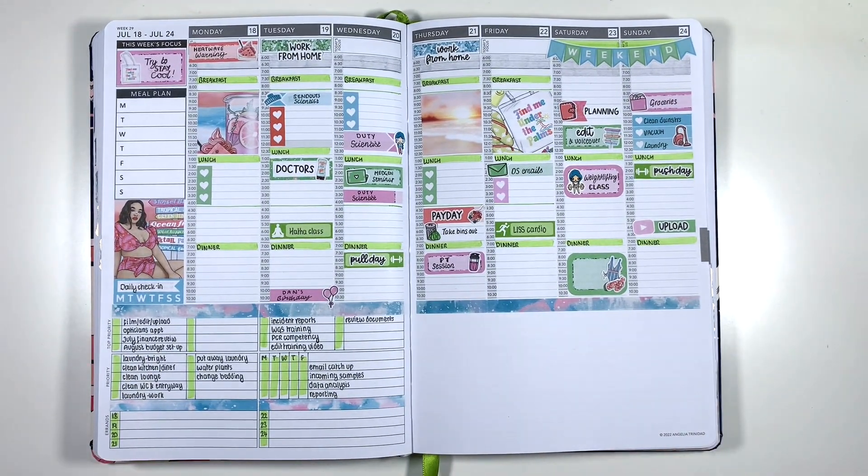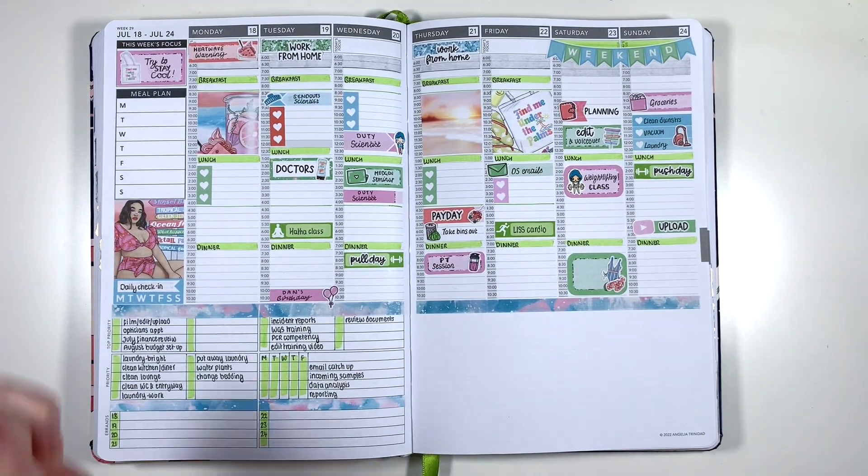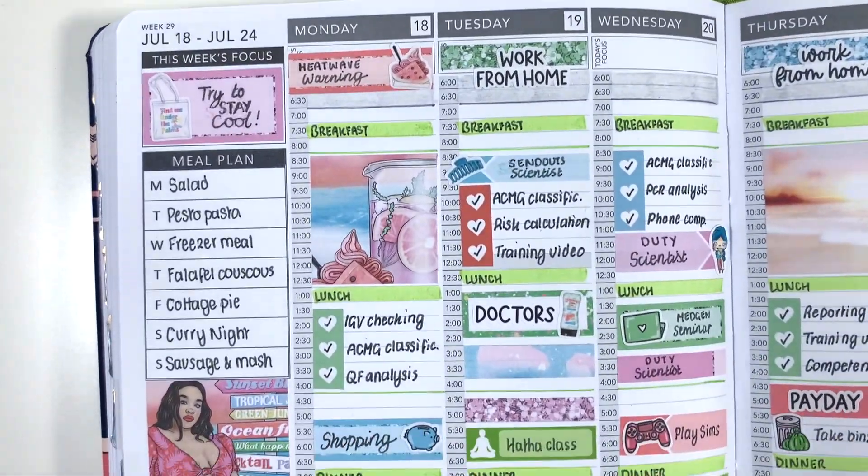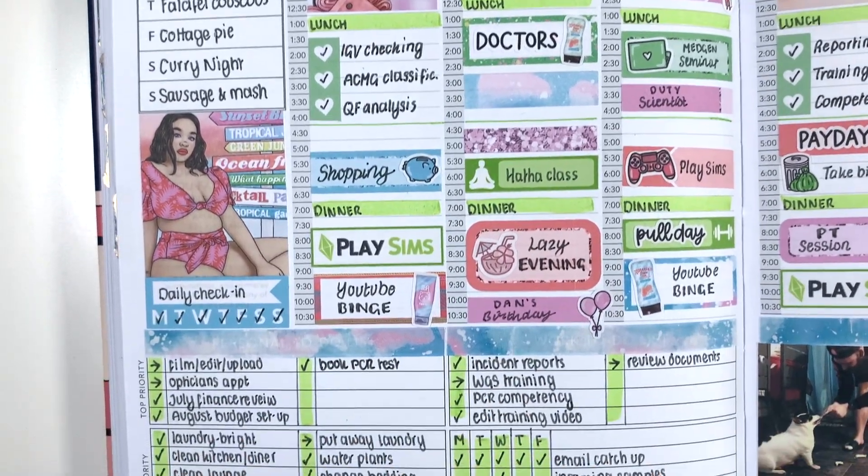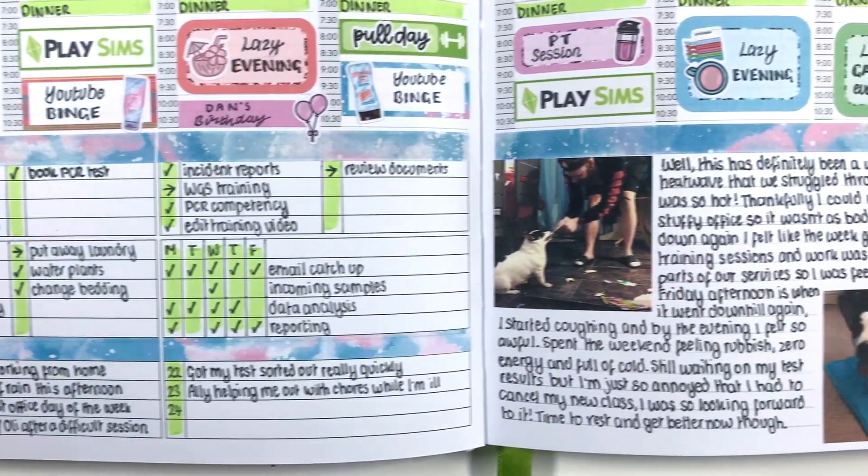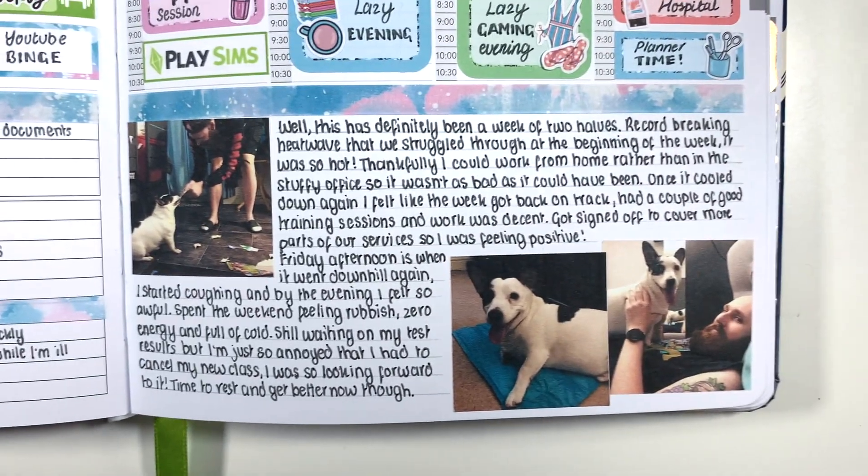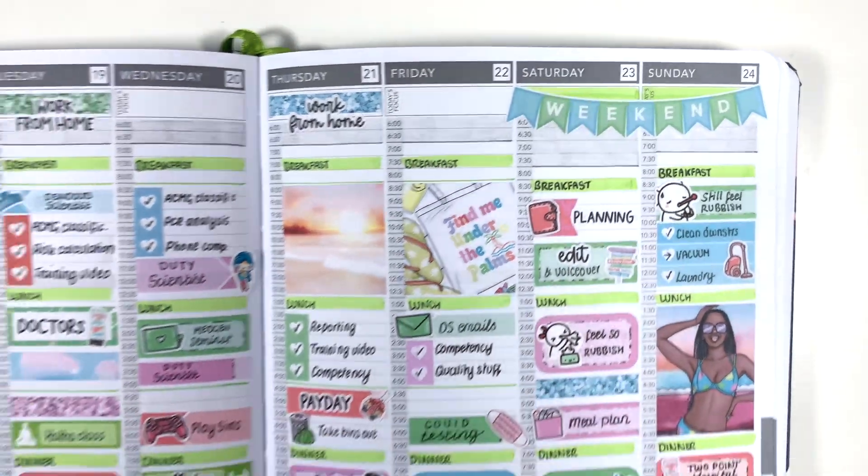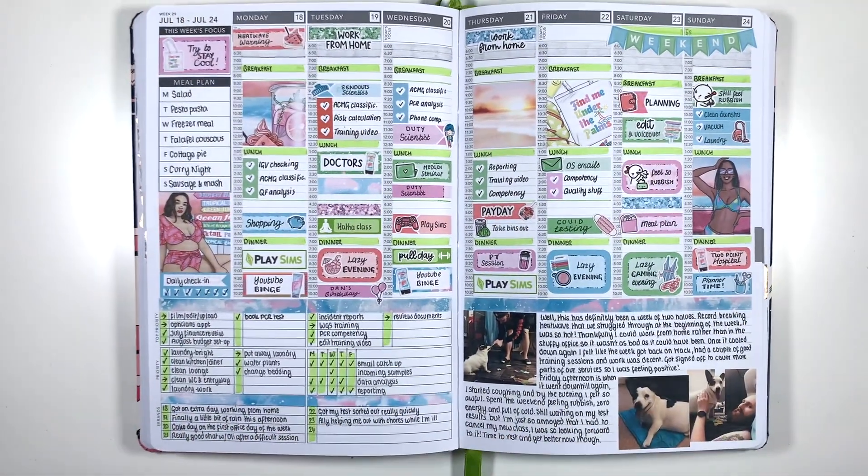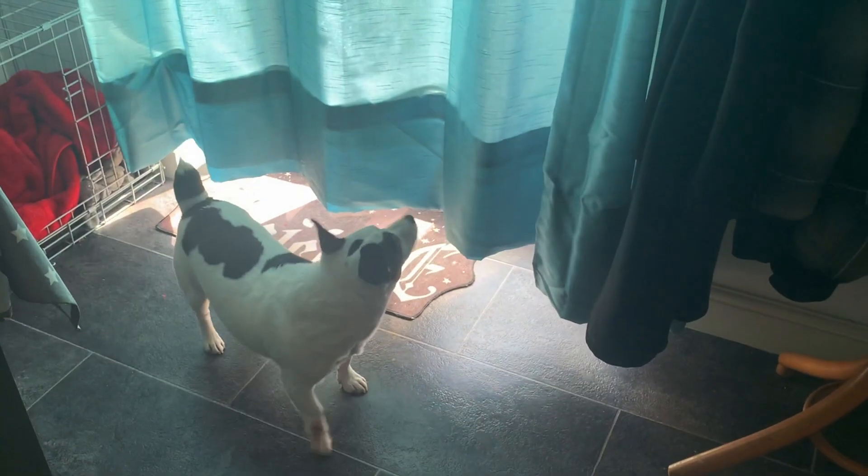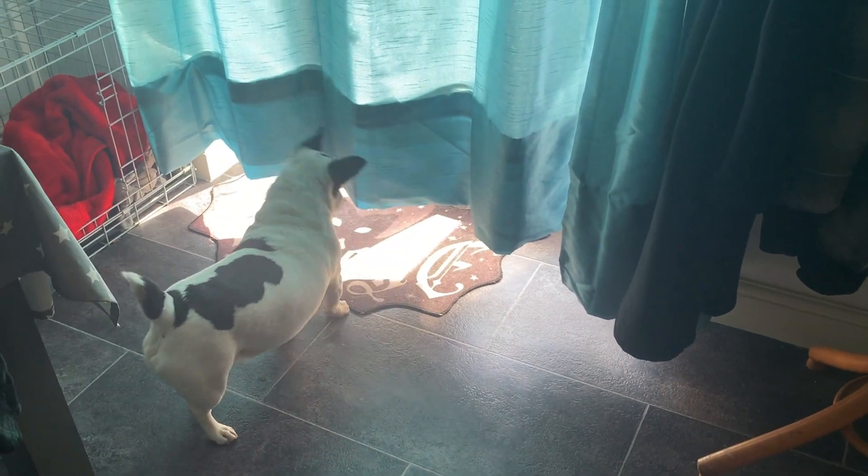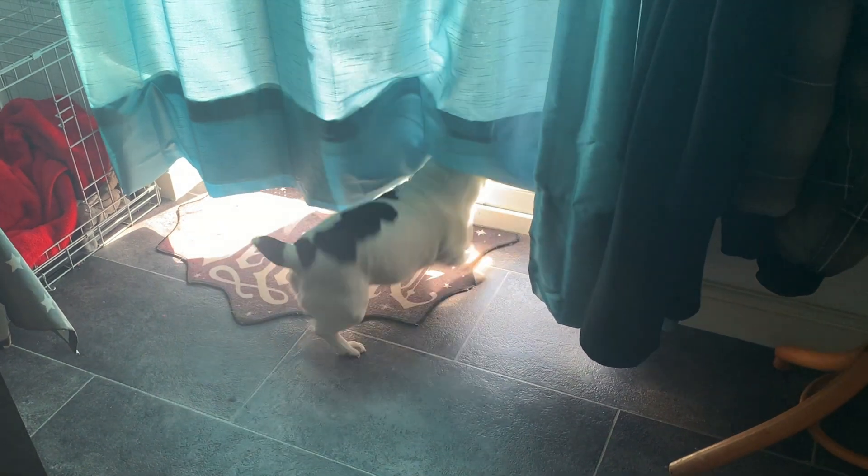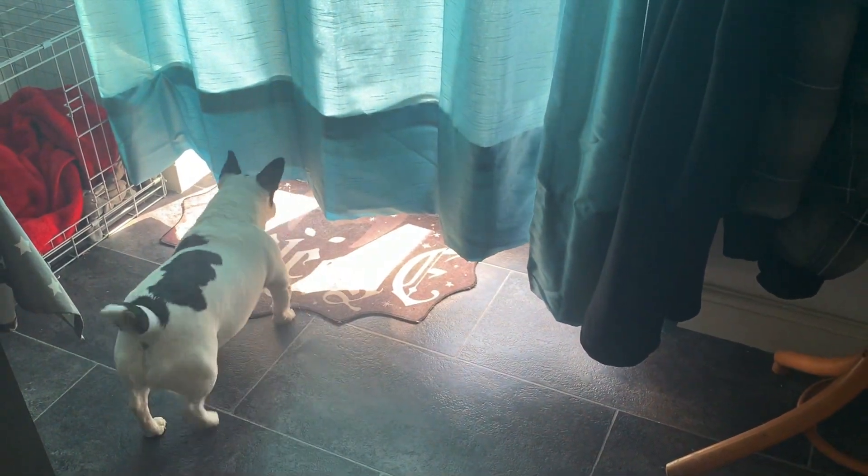So here is the spread all filled out and I really like how this one turned out despite how rubbish the end of this week was. As you can see I just completely gave up on Sunday and covered most of the day up with a decorative box. Also because not a lot happened this week my reflection section is just all pictures of Reggie and I don't mind that one bit. Also now please enjoy a tiny little clip of Reggie versus a fly that was between the curtain and the patio door. I don't want to shame him but he did not catch that fly.